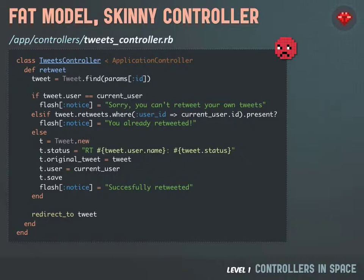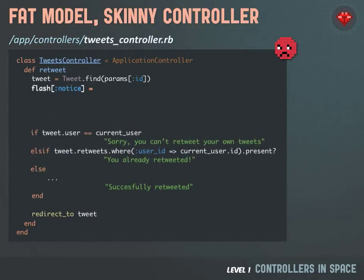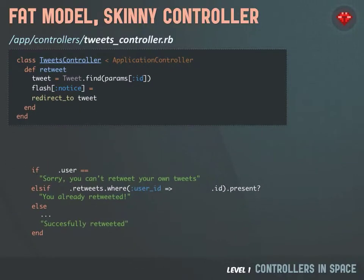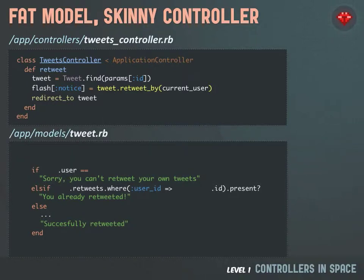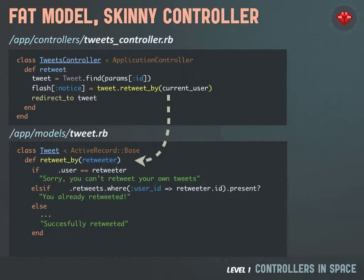The first thing we're going to do to refactor this is we're going to take those flash notices and move them up to the top of the action. We'll then move the redirect up to simplify this controller. The rest of this code we're going to refactor into a method called retweetBy on the tweet model, so we're going to send in who is retweeting this tweet. Then in the tweet.rb model, we'll define the retweetBy method. It takes the retweeter — the user who's trying to retweet — and we just need to specify self where needed. This method is going to return a string which then gets set into the notice.